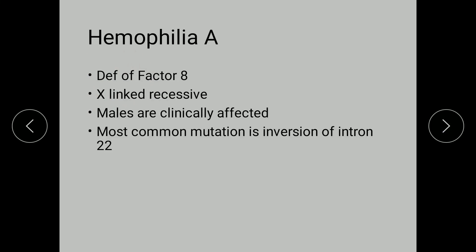Deficiency of Factor 8 is called Haemophilia A, and this is X-linked recessive. Though there is another condition called autosomal dominant Haemophilia, which will be detailed in the next video. Males are clinically affected and women are just carriers. The most common mutation is the inversion of intron 22, which is an important fact to remember.